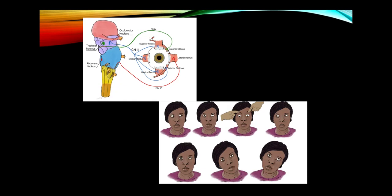The fourth nerve supplies the superior oblique, which when the eye is adducted acts as a pure depressor. In a fourth nerve palsy, the affected eye is slightly higher (hypertropia). The most helpful test is having the patient tilt their head — tilting toward the side of the lesion exaggerates the diplopia. When the head is turned to the opposite side, gaze is fairly conjugate.